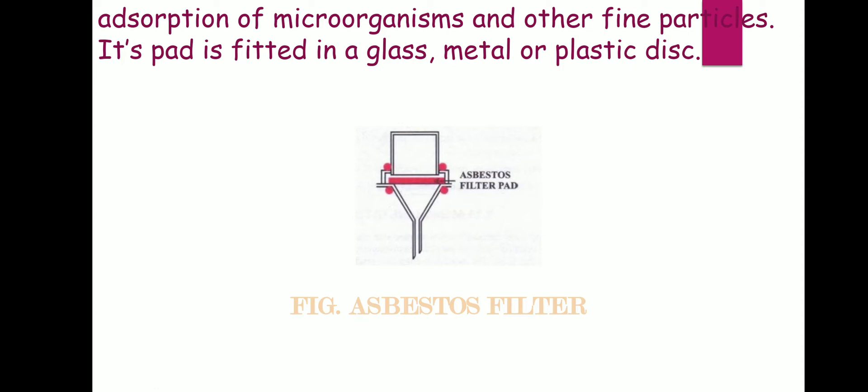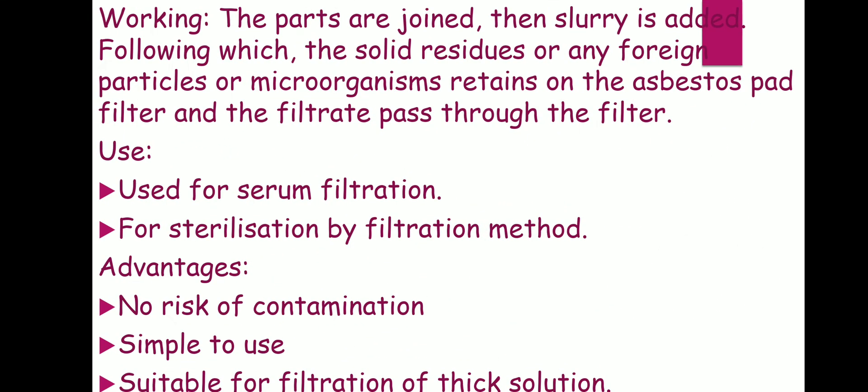Now for the working procedure: first of all, you have to join all parts — the center, the container, the disk (glass, metal, or whatever material). Then set the filter pad. Add the slurry and pour it through. Pass the liquid through, and filtration occurs. The solid residue, foreign particles, and microorganisms will be trapped or retained on the asbestos pad, and the clear filtrate will pass through the filter.